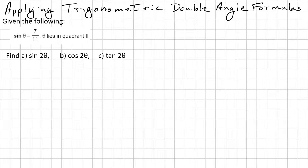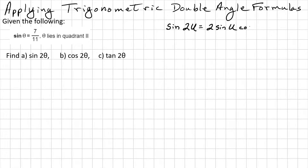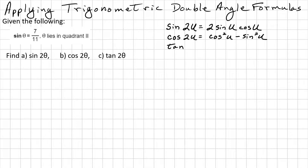This means that we need to know what our double angle formulas are. We'll use the letter u to avoid confusion with Greek letters. Sine 2u is equal to 2 sine u cosine u. There are three possibilities for cosine 2u, but we'll use the first one: cosine squared u minus sine squared u. And tangent 2u is equal to 2 tangent u over 1 minus tangent squared u.